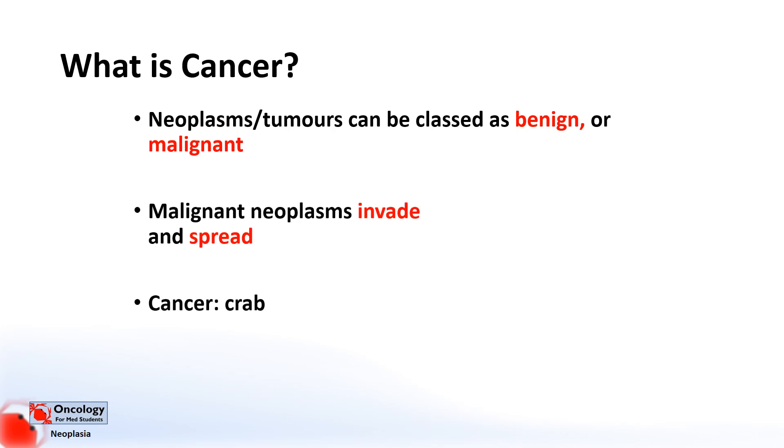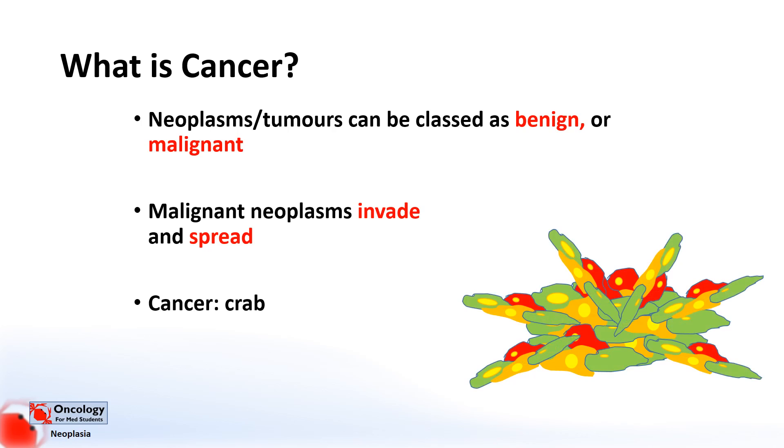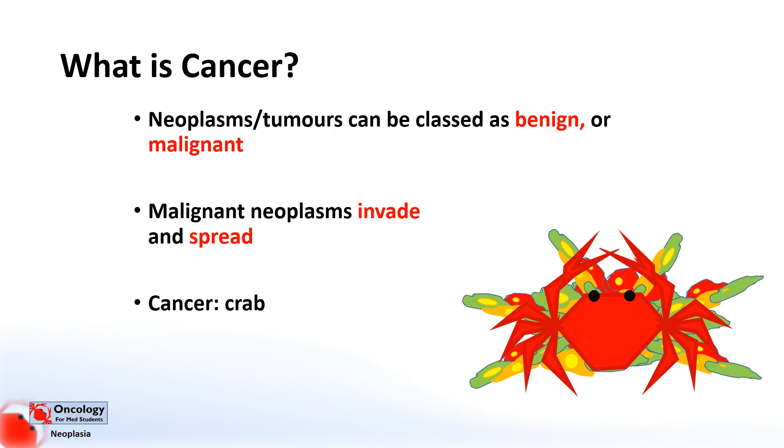So what does cancer mean? The word cancer is thought to derive from a word meaning crab. Hippocrates, the famous Greek physician, first applied the word carchinos, meaning crab, to the tumors he was studying. It isn't known exactly why, but it may be that the physical appearance of the tumors reminded of the crab clinging on to a person and refusing to let go. This crab-like appearance is due to the cancer invading the tissues around it, which is a behavior of malignant neoplasms.